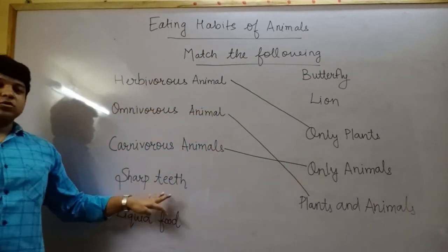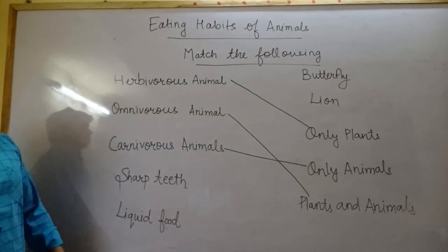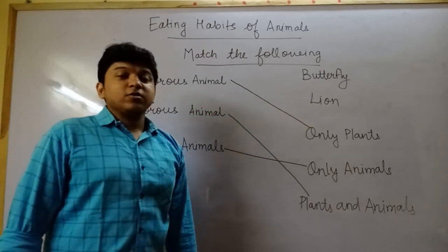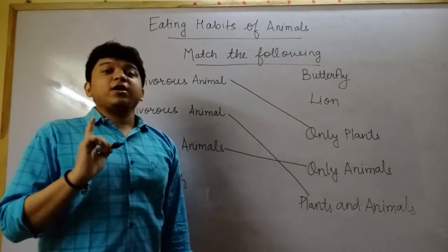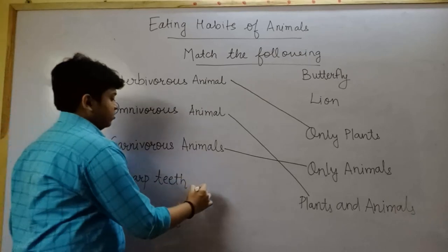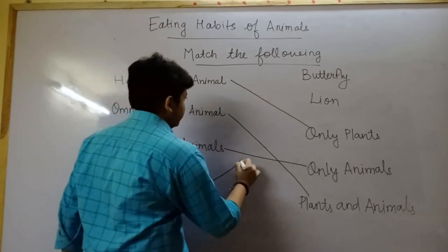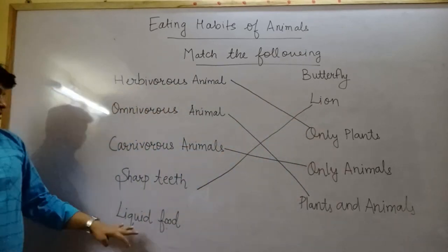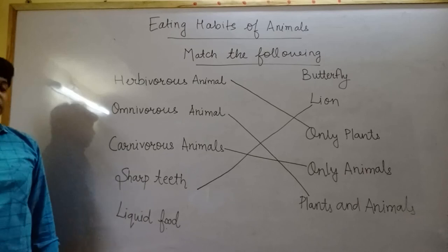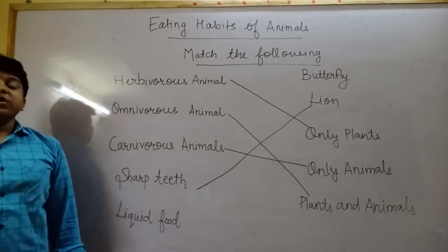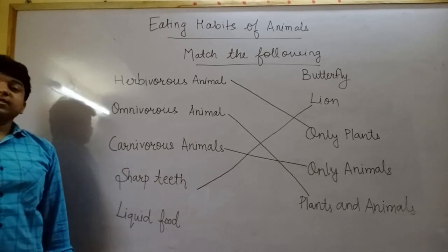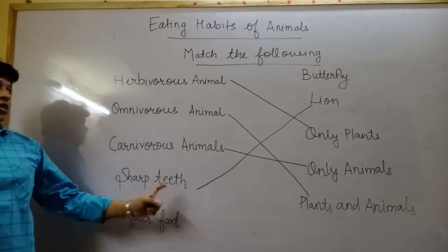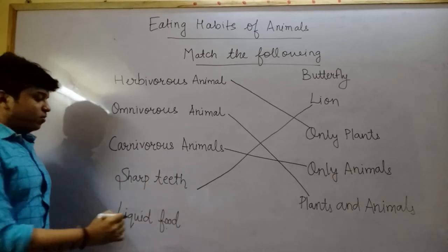Sharp teeth — which animal has sharp teeth, butterfly or lion? Lion has sharp teeth, so we match it with lion. The last one is liquid food. Butterfly takes its food from flowers, so we match liquid food with butterfly.